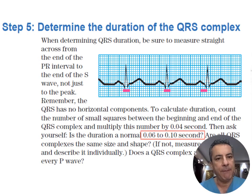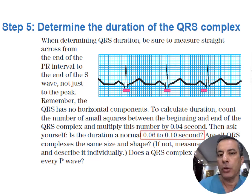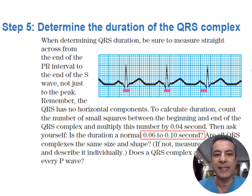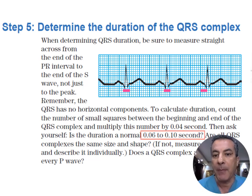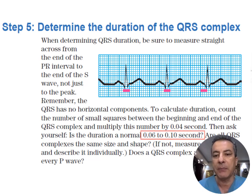Step five: take note of the QRS complex morphology in each lead. Assess whether they appear uniform, describe and measure the duration of each morphology, and if any variation exists, always consider the widest QRS measured among different leads. The duration of the QRS complex ideally should not exceed 100 milliseconds.